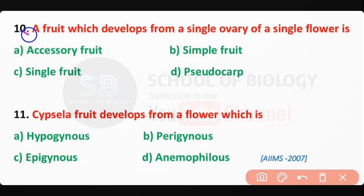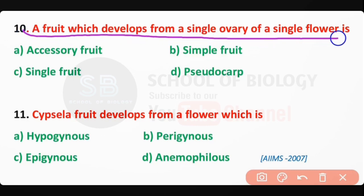Q10: A fruit which develops from a single ovary of a single flower is known as a simple fruit — correct answer is option B.